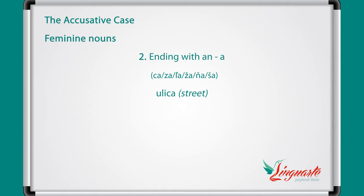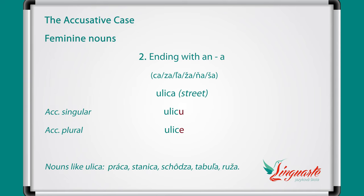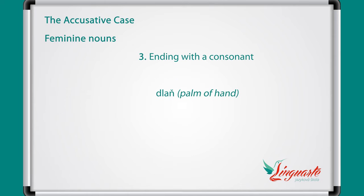The nouns ending in a but preceded by a soft consonant — that means words ending with ca, za, la, ža, ňa, ša. The model is ulica (street). The accusative singular is ulicu and for plural ulice. Other nouns like ulica are práca, stanica, schoda, tabuľa, ruža.